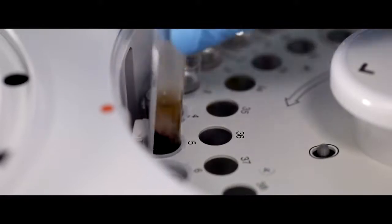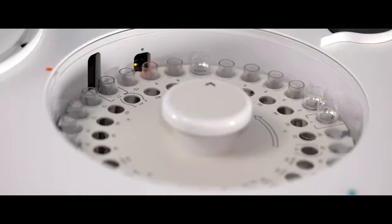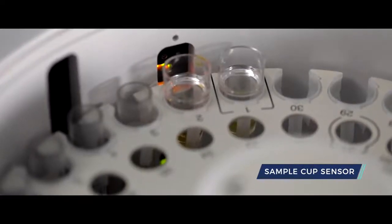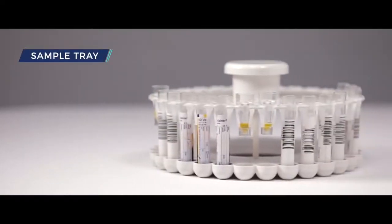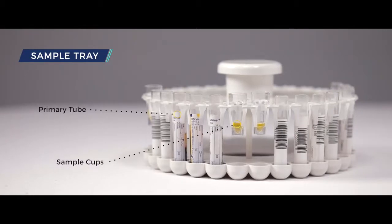The universal sample tray contains 30 positions for samples and 45 positions for standards with a unique sample cup sensor. The sample tray accommodates primary tubes, aliquot tubes and micro cups.